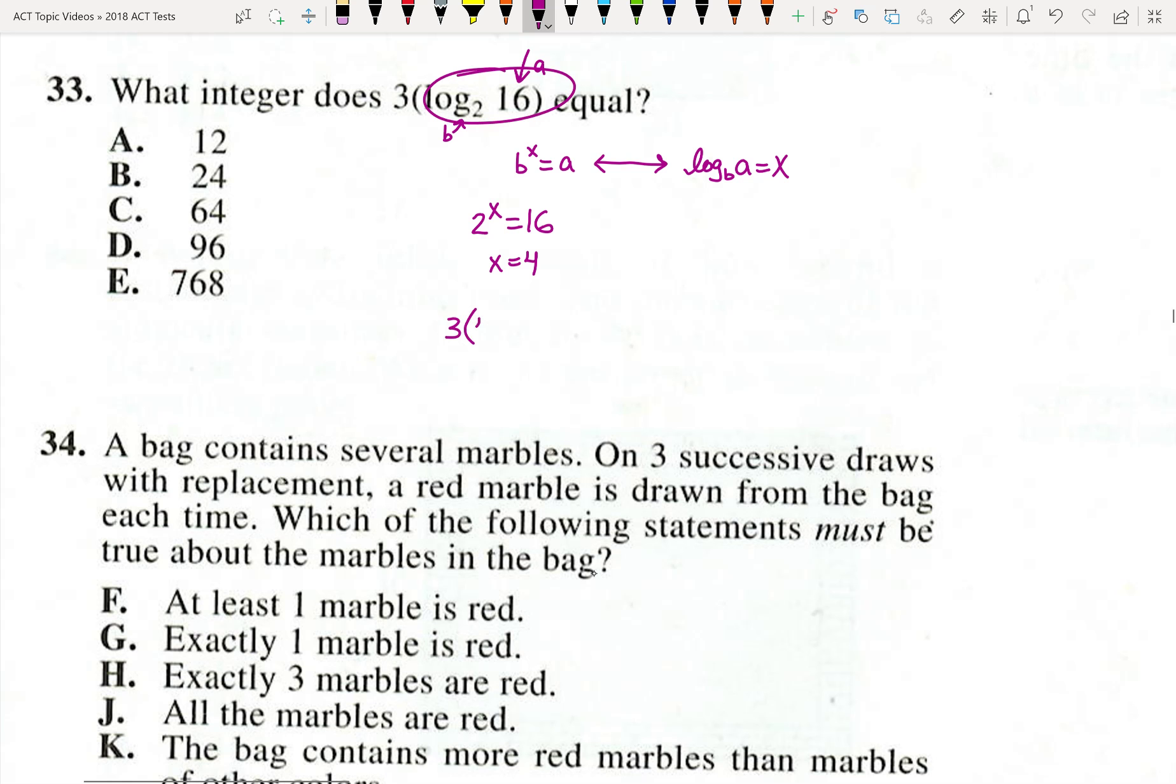So it's really just asking you what 3 times 4 is. So if you know that, the question is really easy. 3 times 4, of course, is 12 is our answer.